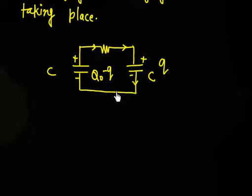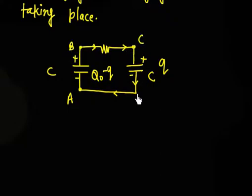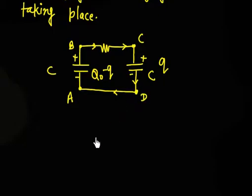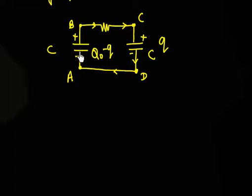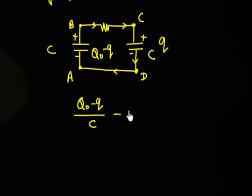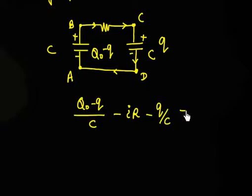Now I apply Kirchhoff's law to write the circuit equation. Let the points be A, B, C, and D. Going from A to B there is an increase in potential of (Q0 − q)/C. Then there is a decrease in potential due to the resistance: minus I times R. Then going through the second capacitor there is a decrease of minus q/C, and we land back at point A, so this equals 0.